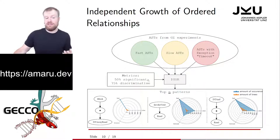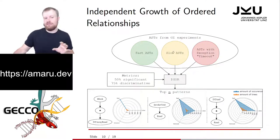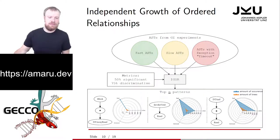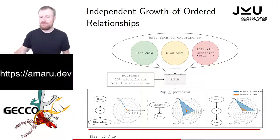We provide metrics to the IGOR algorithm — for example, 50% significant, meaning a pattern must occur in at least half of all the abstract syntax trees in a group, and 75% discriminative, meaning it can still occur in up to 25% of the slow ones, but at 26% it is no longer a valid pattern. Down here you can see one of the generated reports of the Amaro framework, which would say this pattern only occurs in the fast algorithms, this one occurs in all of them but mostly in the fast ones, or this one does not occur at all in the timeout group — that's why it's discriminative.